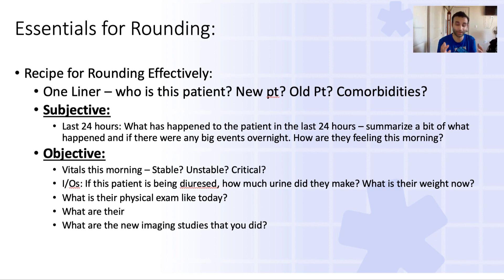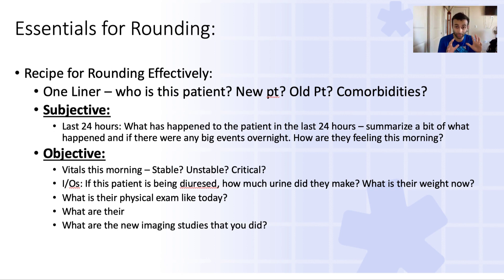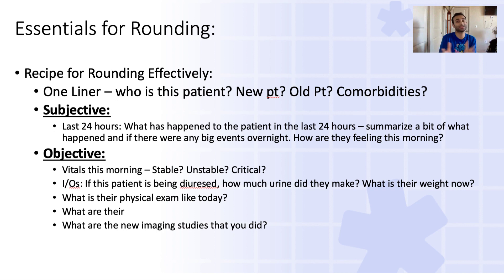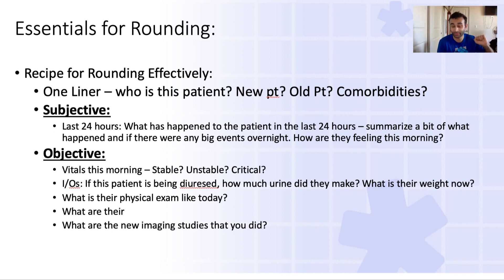The second part of rounding is the objective aspects — reviewing all of the objective data. The first piece is the vital signs: heart rate, temperature, blood pressure, respiratory rate. By writing that down, you're already asking: is the patient septic, hypotensive, tachycardic? The second part is whether the patient is stable, unstable, or critically ill. If a patient is hypotensive, has an uptrending lactate, and is not mentating well, that's a patient who probably shouldn't wait until rounds. Do you need to address them right away — give them fluids, start antibiotics — before you even get to rounds?